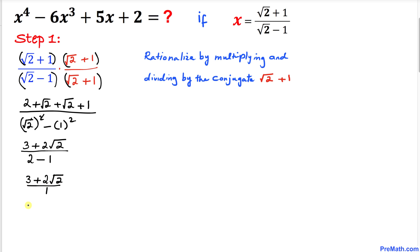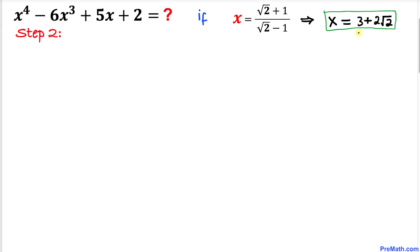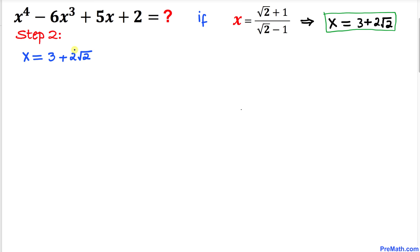We can see that this part has been simplified to 3 + 2√2, so therefore x = 3 + 2√2. Now for the next step, let's focus on x = 3 + 2√2. We move the 3 to the left-hand side to isolate the radical part, giving us x - 3 = 2√2.